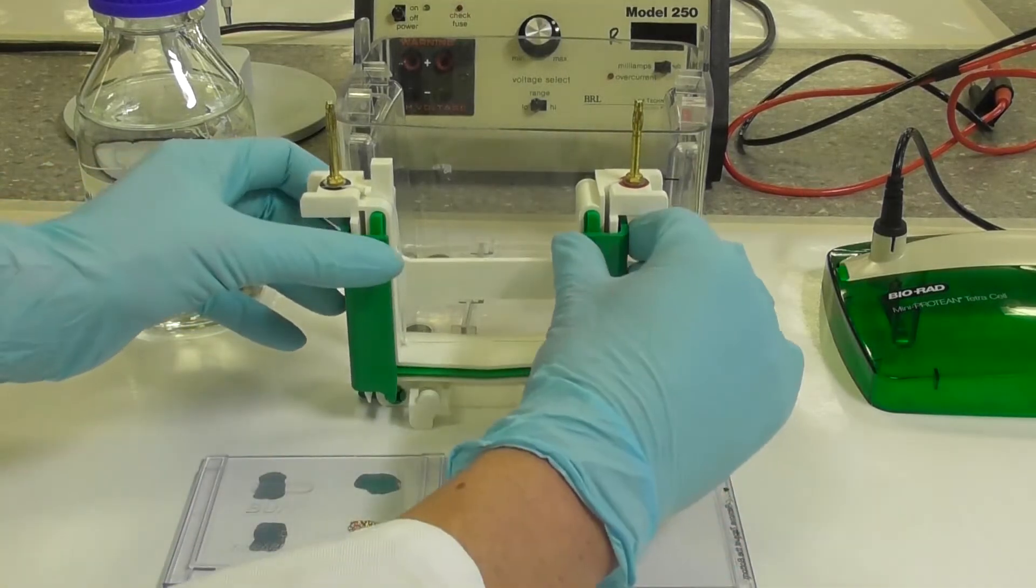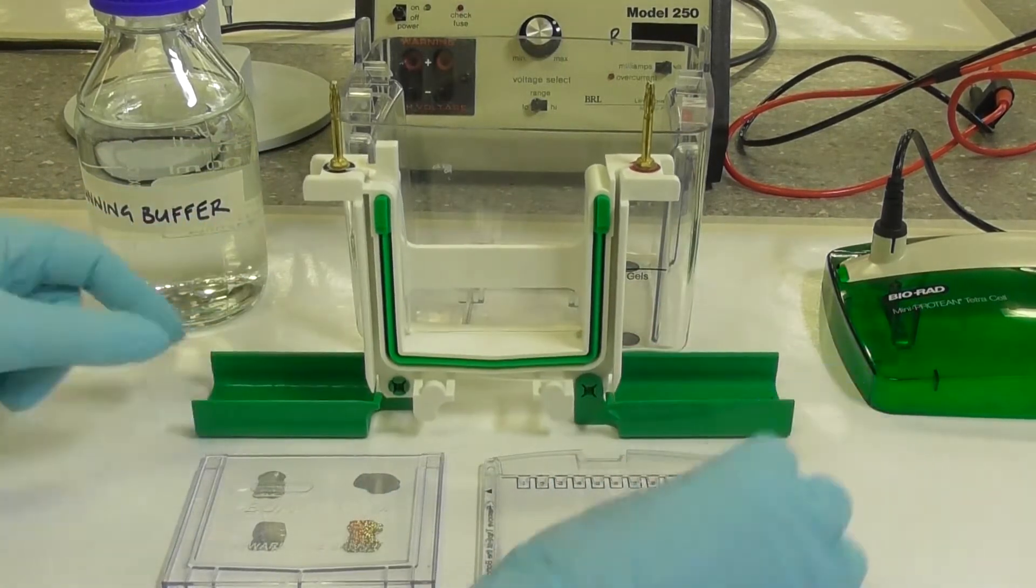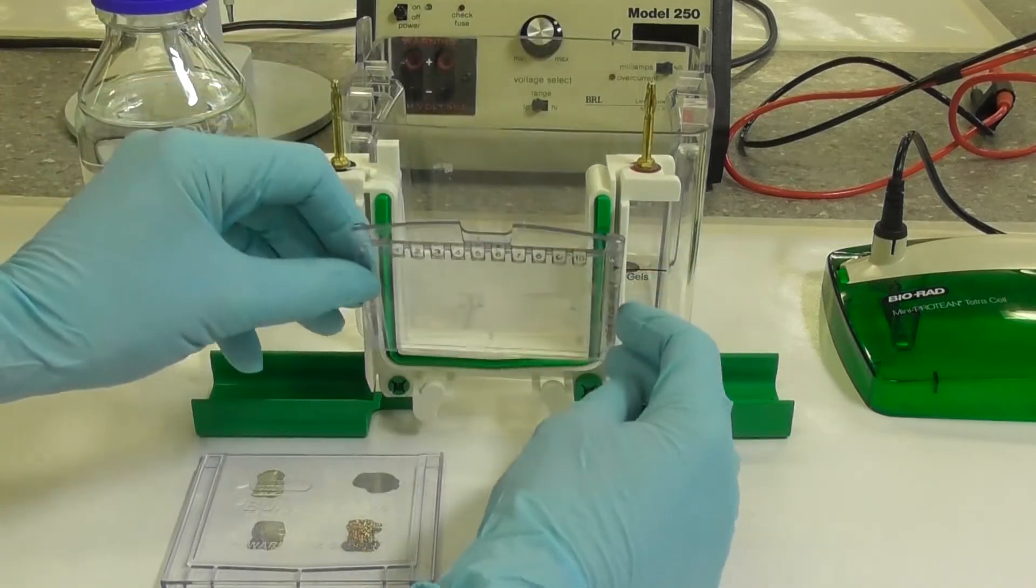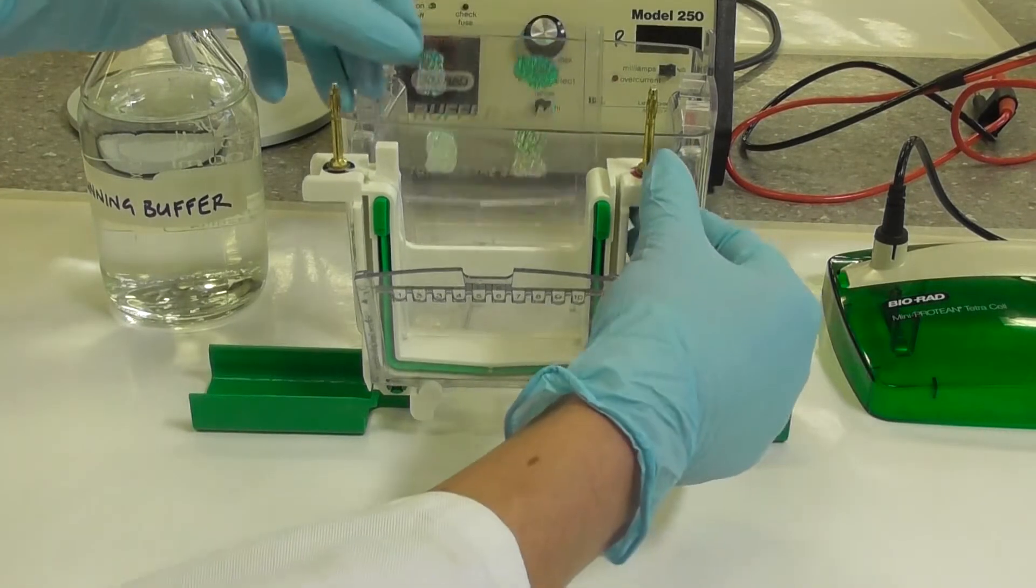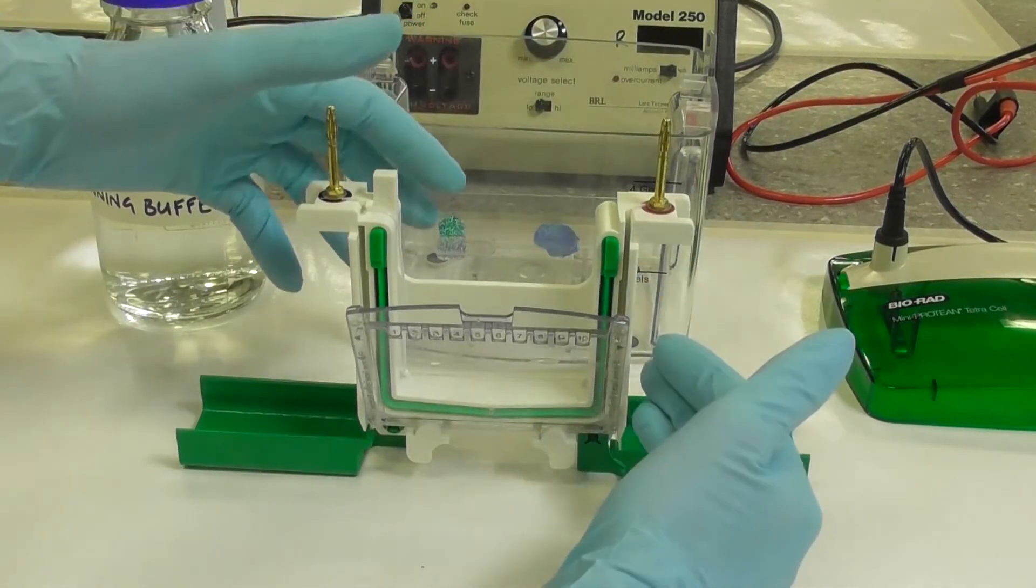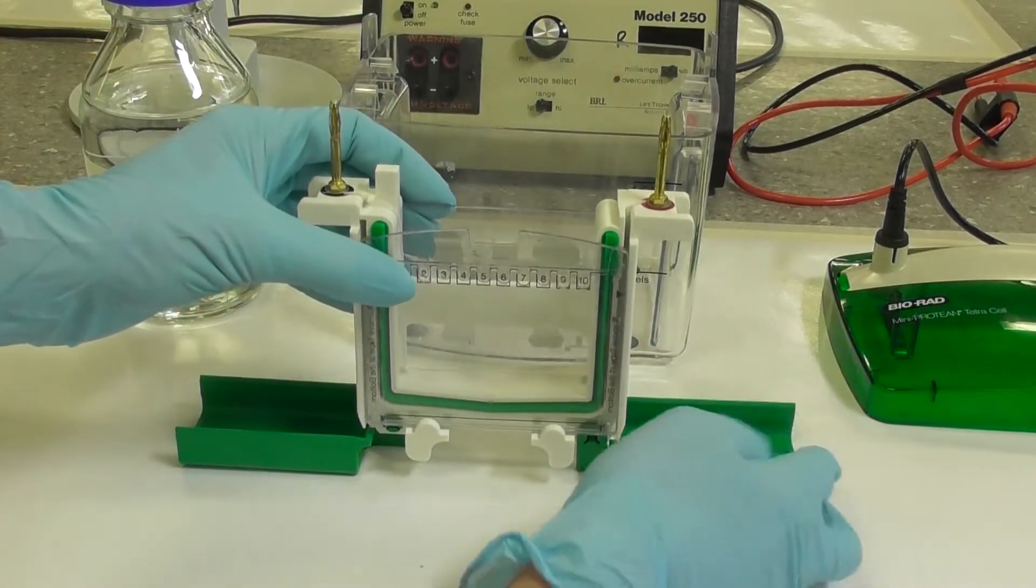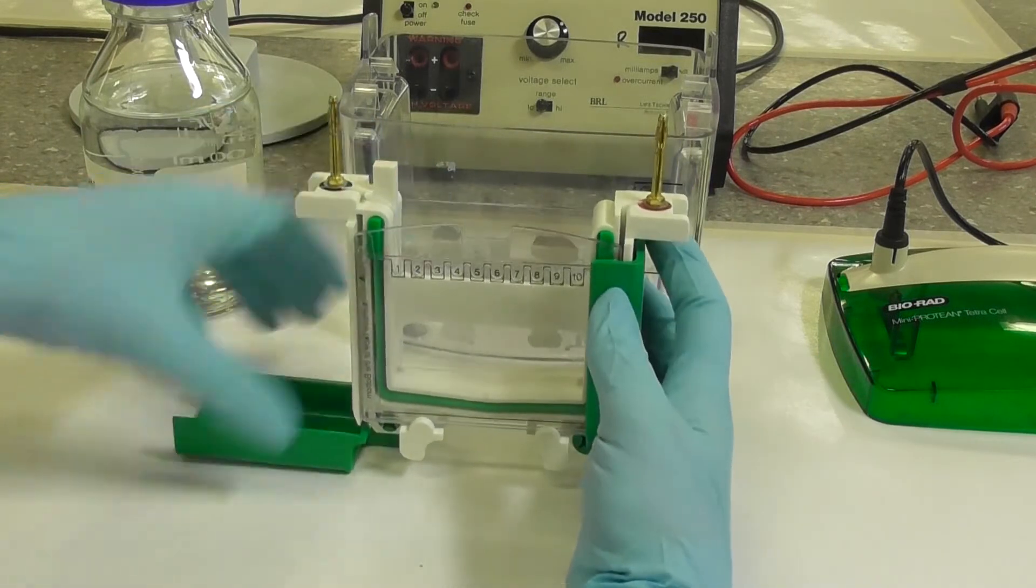Fold down the two arms of the unit. Place the gel with the shorter plastic plate inwards on the plate rests. Place the buffer dam on the other side so that it seals against the contours of the green gasket. Press the gel and dam towards the centre and fold up the two arms of the unit.